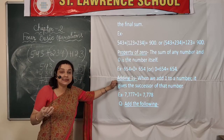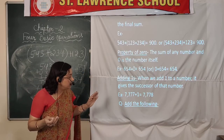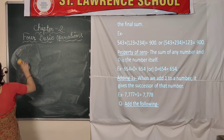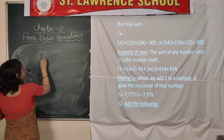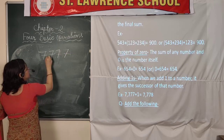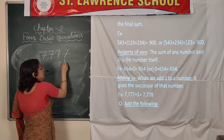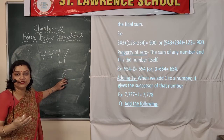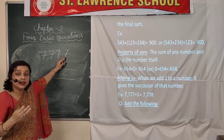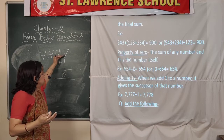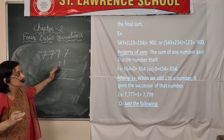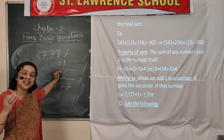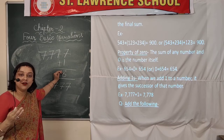The next property is adding 1: when we add 1 to a number, it gives the successor of that number. For example, if we take 777 and add 1, we get 778. The digit 8 is the next consecutive number after 7, which is greater than 7. So 778 is our answer, and this 8 is the successor — the next consecutive number — of 7. We call it the successor of that number.